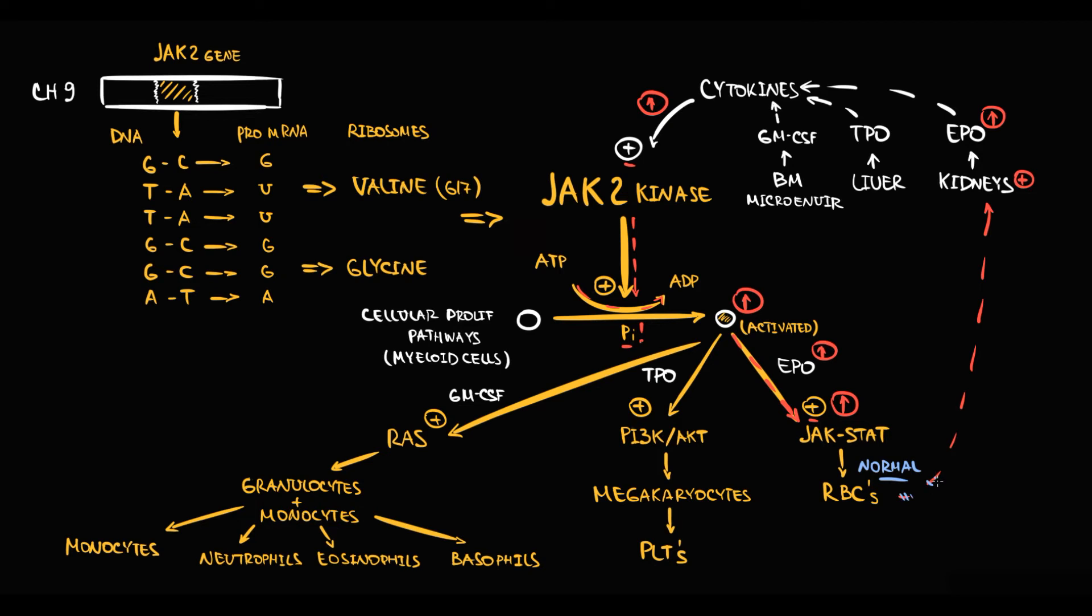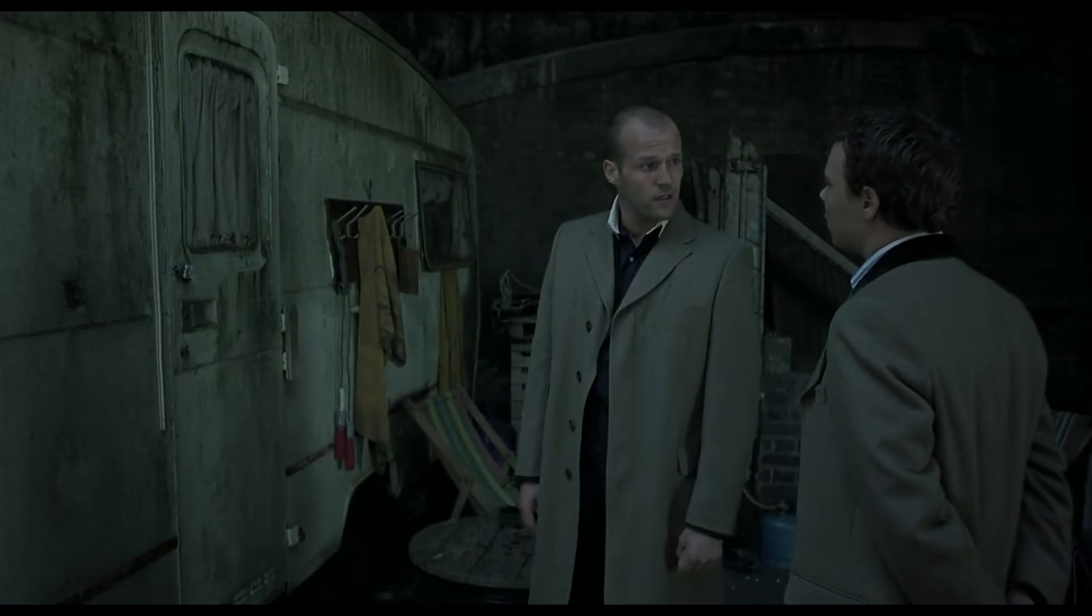Important that when red blood cells reach normal values, kidneys begin to decrease the production of erythropoietin. Now the stimulation of JAK2 kinase will decrease, so the stimulation of JAK-STAT pathway will decrease, and thereby the production of red blood cells will decrease. Everything is normal until mutation in JAK2 gene occurs.